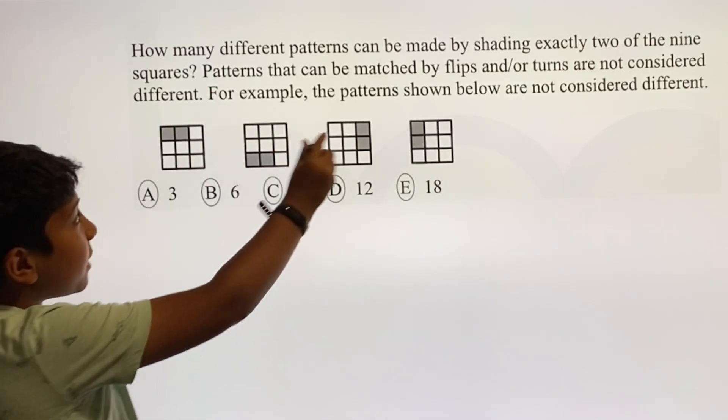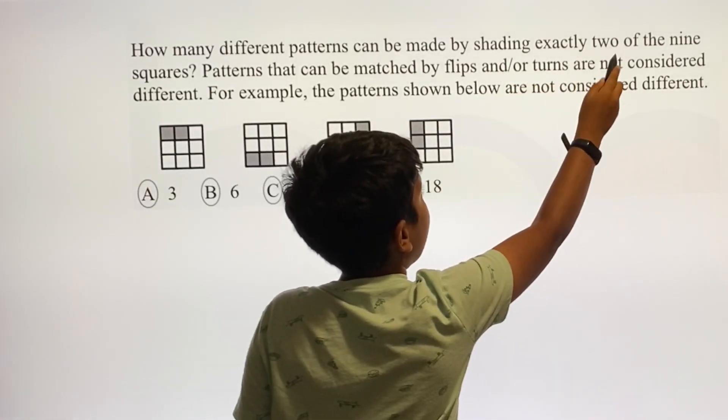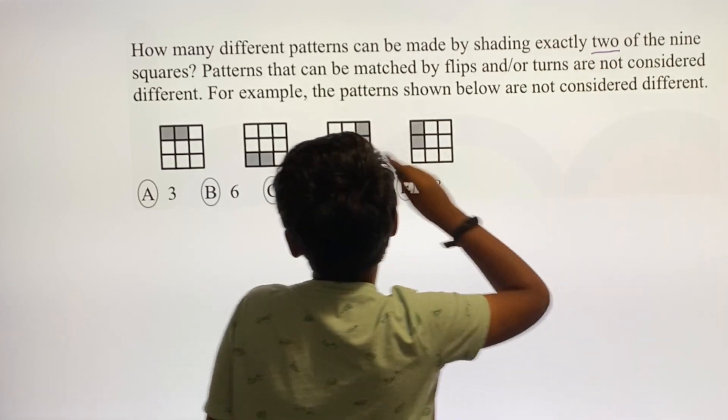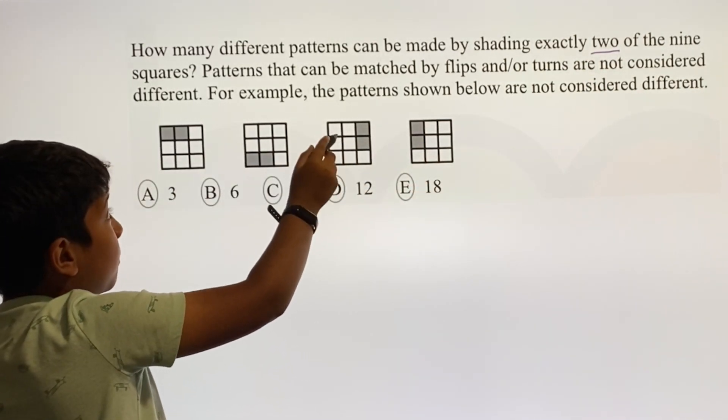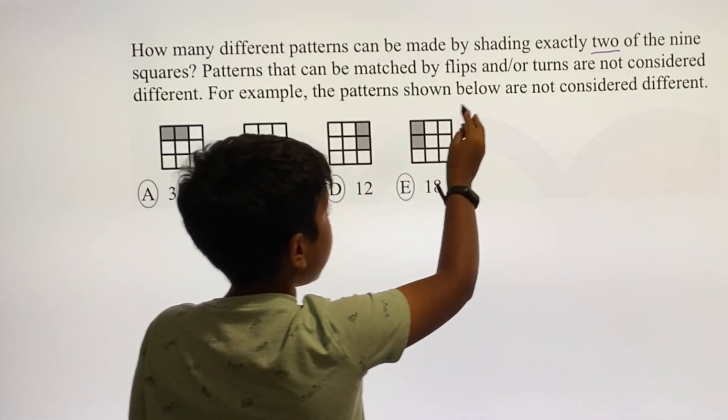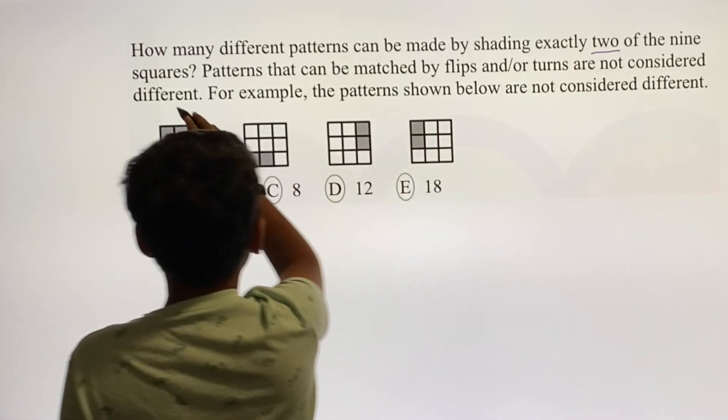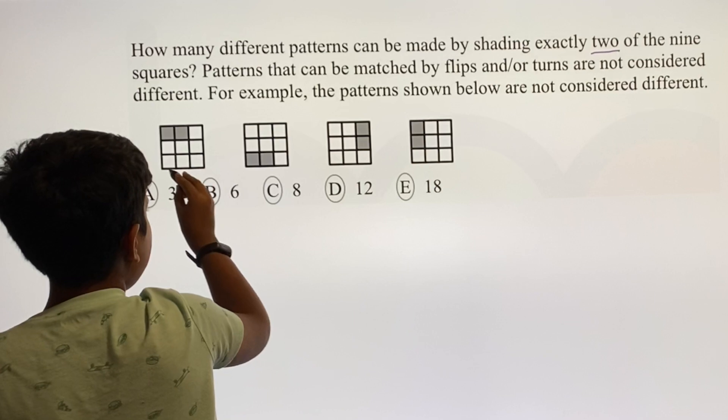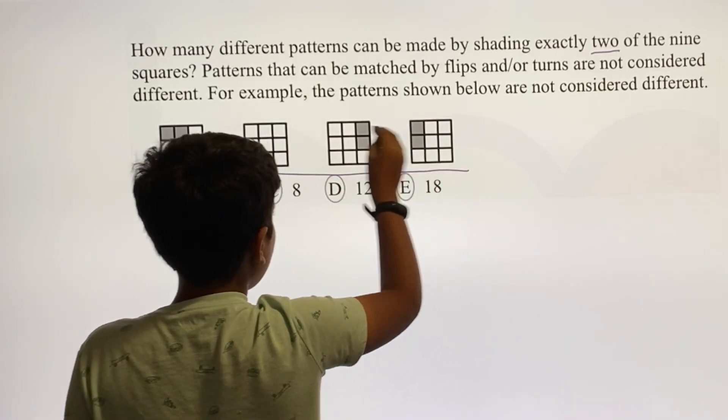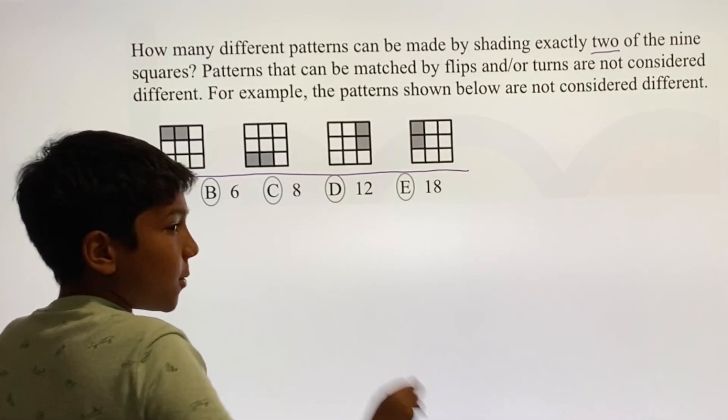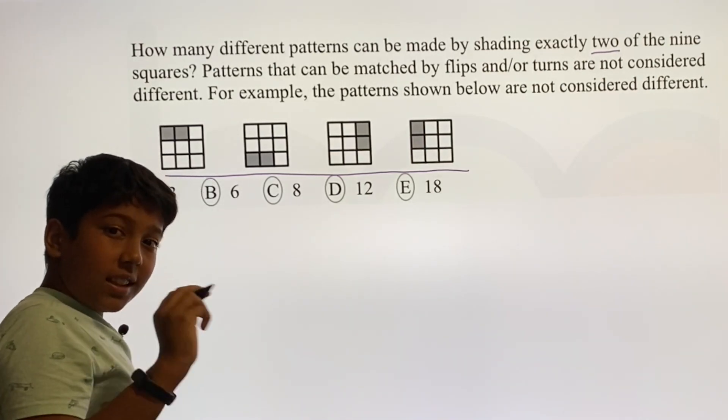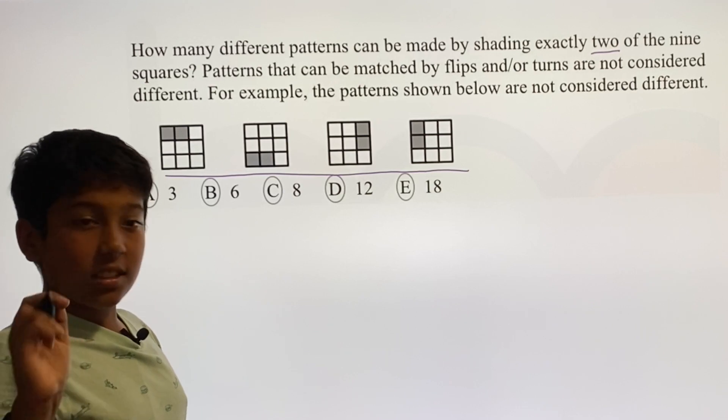How many different patterns can be made by shading exactly two of the nine squares? Patterns that can be matched by flips and/or turns are not considered different. For example, these patterns are not considered different. This is actually a really easy way to get the answer to this.